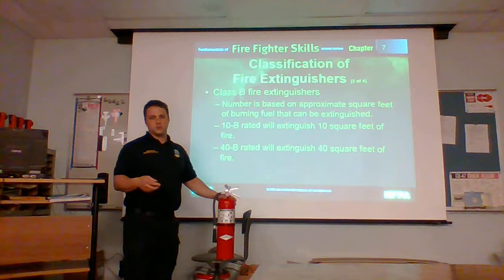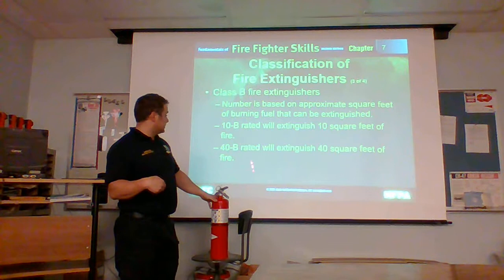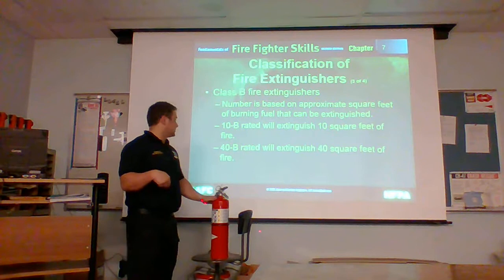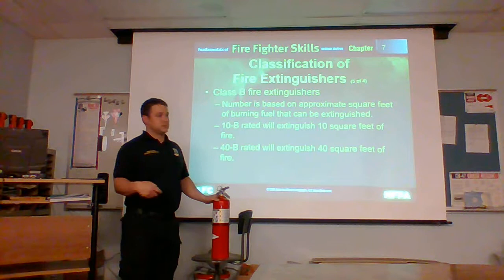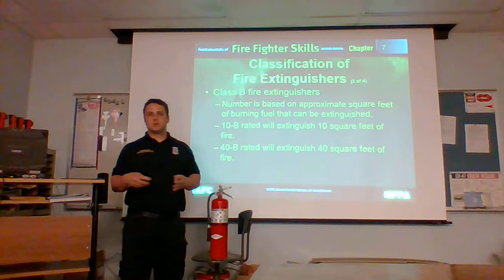Maybe it's a trash can that caught on fire and rolled out and spread a little bit. Like I mentioned, this is an 80B, so it's twice as much as a 40B — 80 square feet of fire. That would be 9 feet by 9 feet, which is 81 square feet. So essentially this can put out 81 square feet of fire, which would be a kitchen table, your couch, your recliner, a small room and contents.